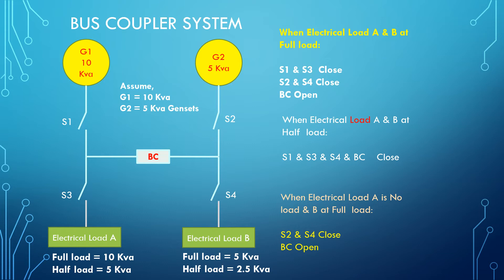Generator 2 is off, Generator 1 is on and connected, supplying electrical load B. In this condition, Generator 2 (G2) and Generator 1 (G1) can be switched between loads depending on the requirement.